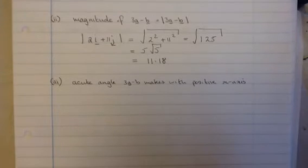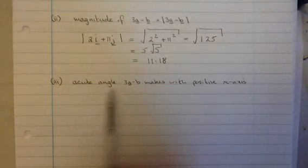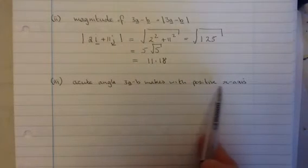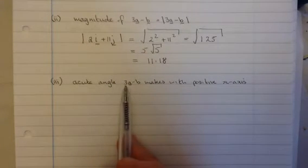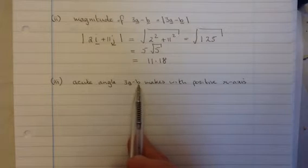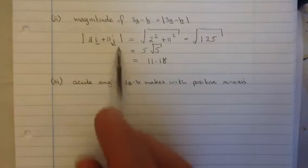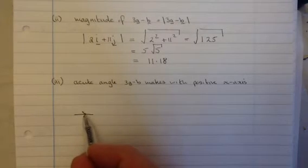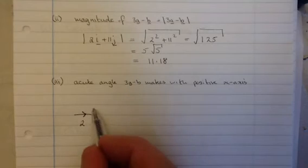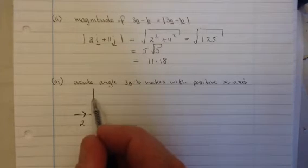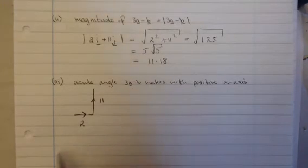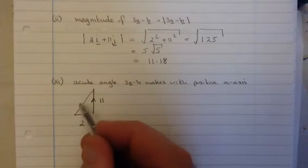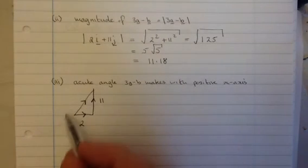Now, if we're not quite sure why we use Pythagoras, this is the next question. We've been asked to find the angle 3a minus b makes with the positive x-axis. The good idea is if we actually draw out what 3a minus b looks like. So 2i plus 11j means you're going to have a vector that's 2 in the x-direction, followed by 11 in the j-direction or y-direction. That's what the vector 2i plus 11j would look like.